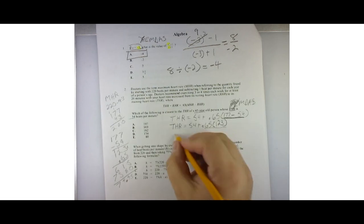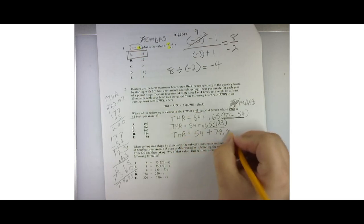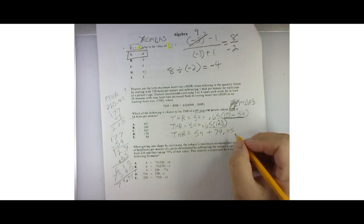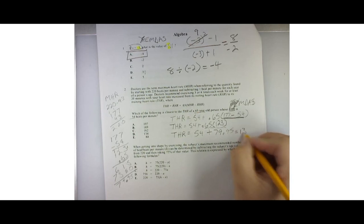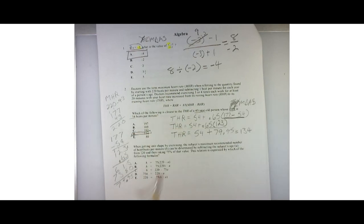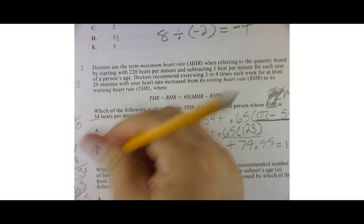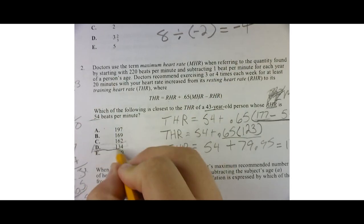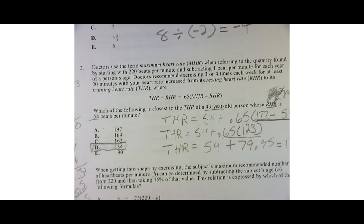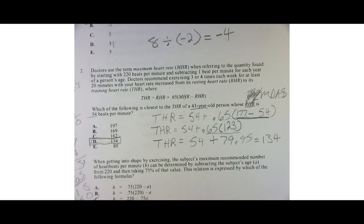So now I've got THR is equal to 54 plus 79.95. Well, couldn't we think of that as like being 80? So 54 plus 80 is really like 134, isn't it? That's a lot of work. Okay.